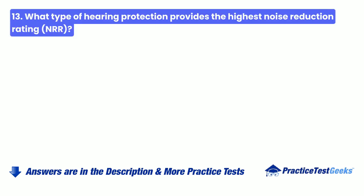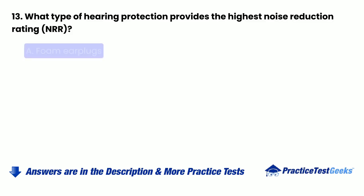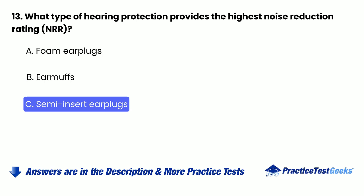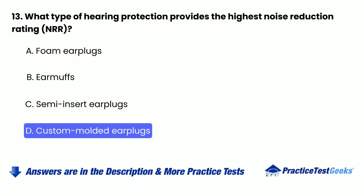Question 13: What type of hearing protection provides the highest noise reduction rating (NRR)? A. Foam earplugs. B. Earmuffs. C. Semi-insert earplugs. D. Custom molded earplugs.